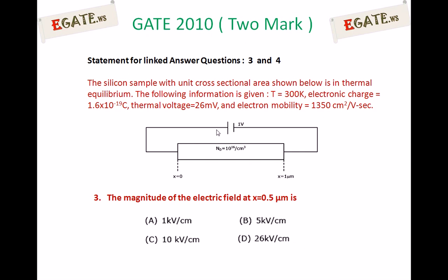The silicon sample with unit cross-sectional area shown below is in thermal equilibrium. The following information is given: T = 300 Kelvin, electron charge = 1.6 × 10^-19 Coulombs, thermal voltage = 26 millivolts, and electron mobility = 1350 cm²/V·s.